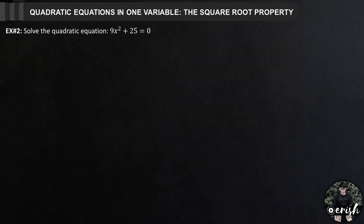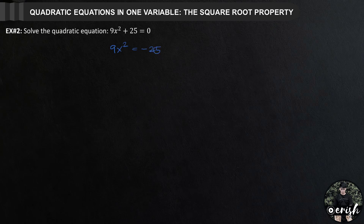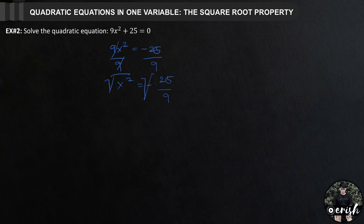Example number 2: solve the quadratic equation 9x squared plus 25 equals 0. Since we are using the square root property method, we get 9x squared equals negative 25. Dividing both sides by 9, x squared equals negative 25 over 9. Applying the square root property, x equals plus or minus square root of negative 25 over 9.